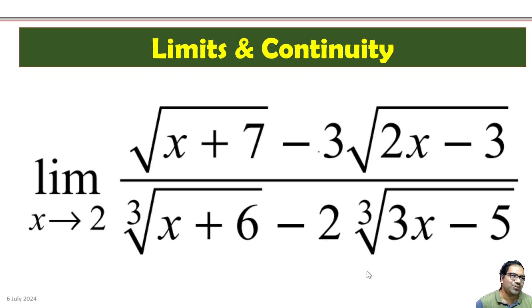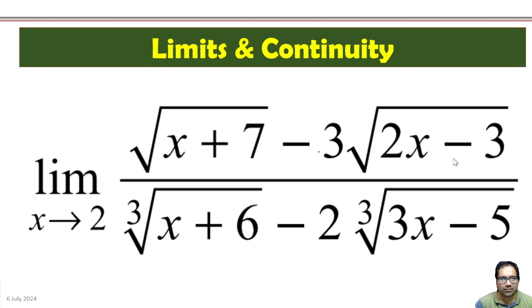We have the limit as x tends to 2 of square root of (x+7) minus 3 times square root of (2x-3), divided by cube root of (x+6) minus 2 times cube root of (3x-5).